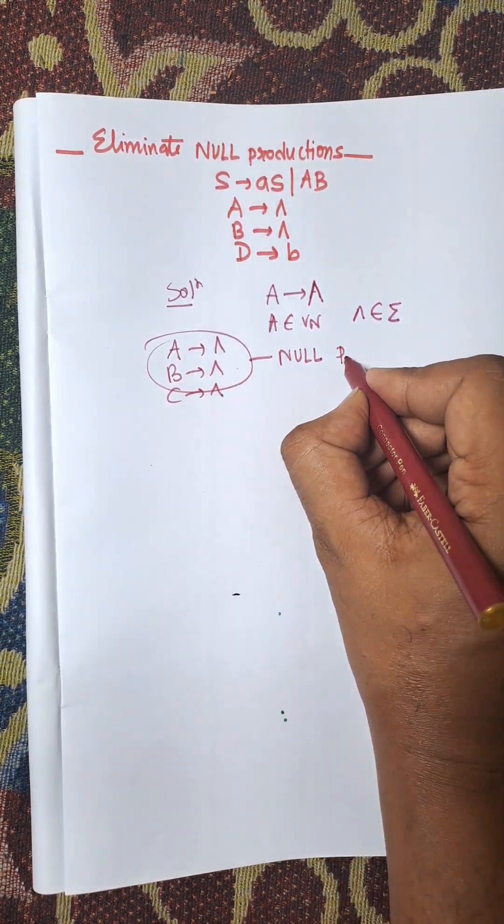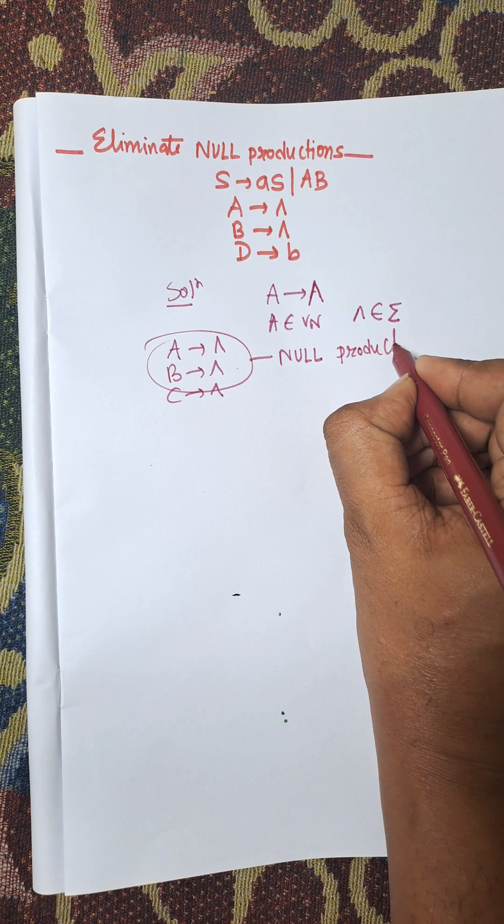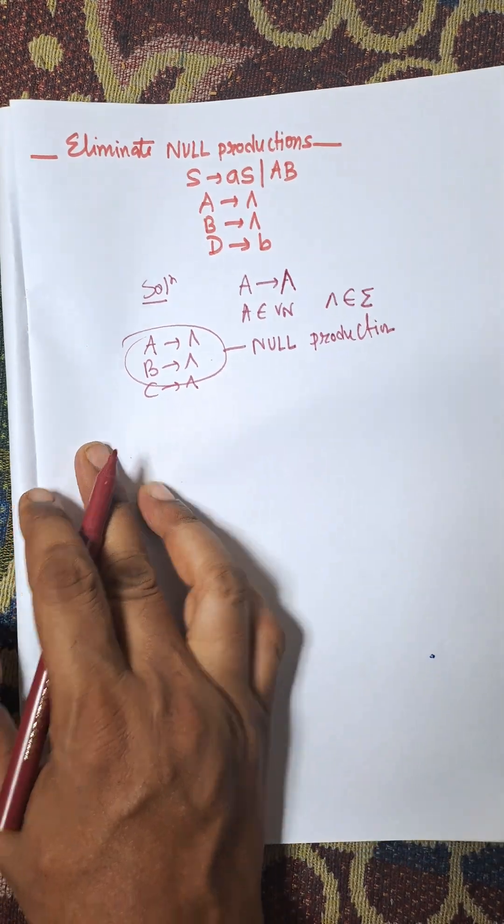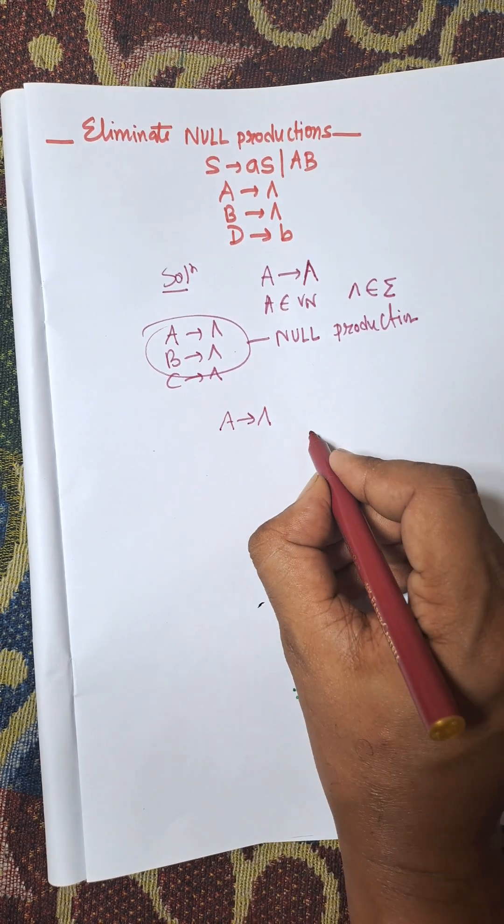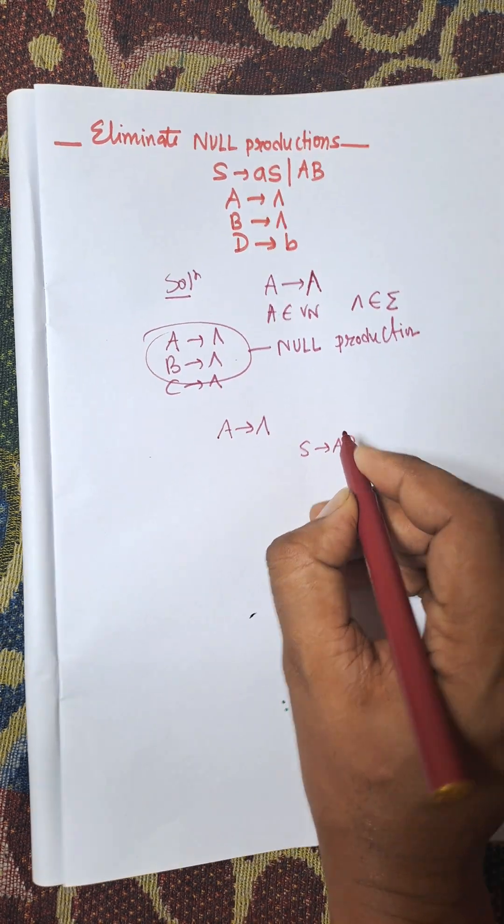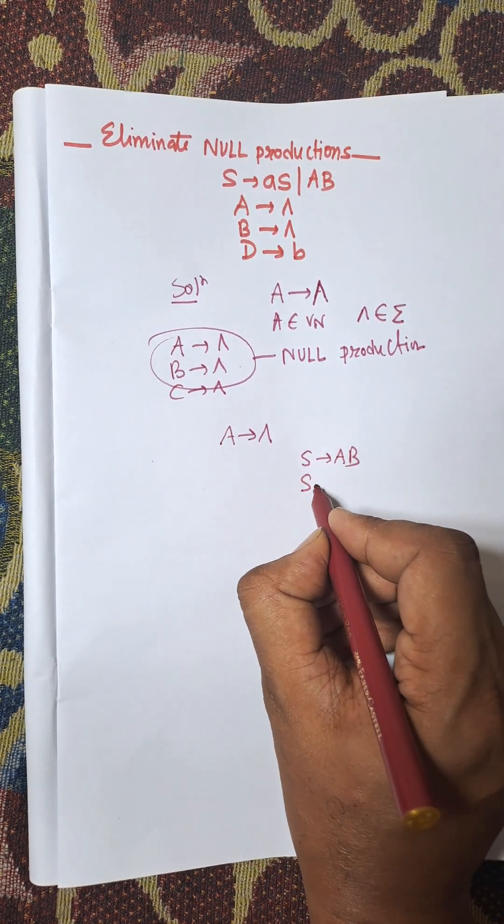We need to remove the null productions from the given question. Here null productions are A arrow empty. Now here S is to AB. So when A is empty, then we get S is to B.